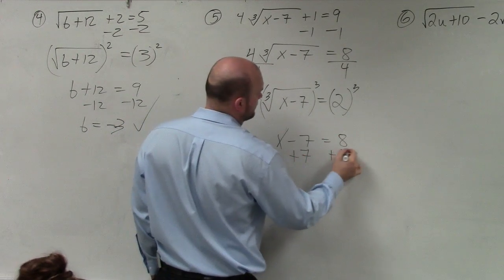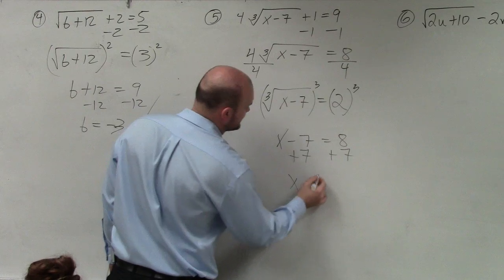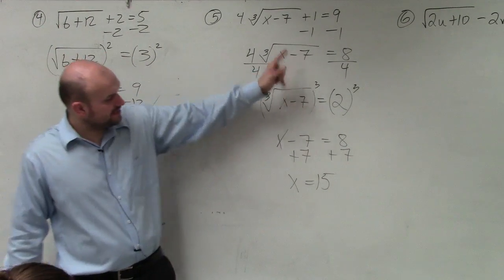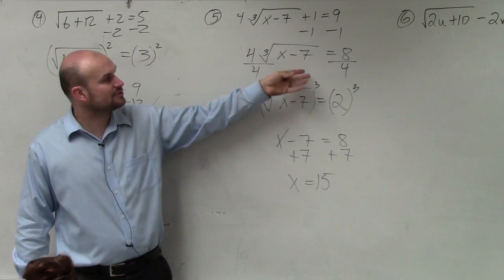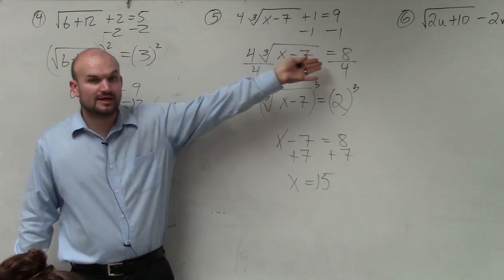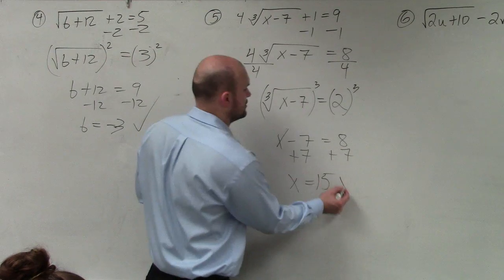Add 7, add 7, x equals 15. I plug 15 back into here. 15 minus 7 is 8. The cube root of 8 is going to be 2. 2 times 4 is 8. So this answer checks out.